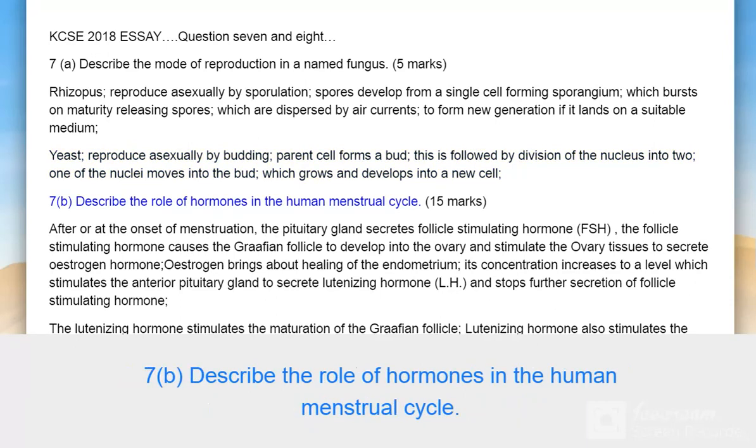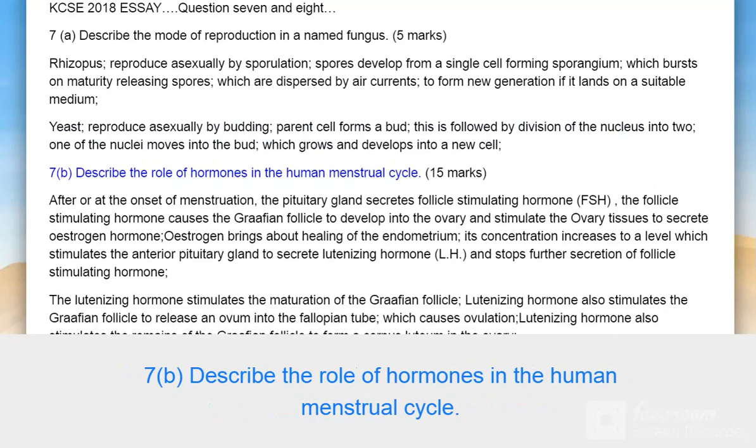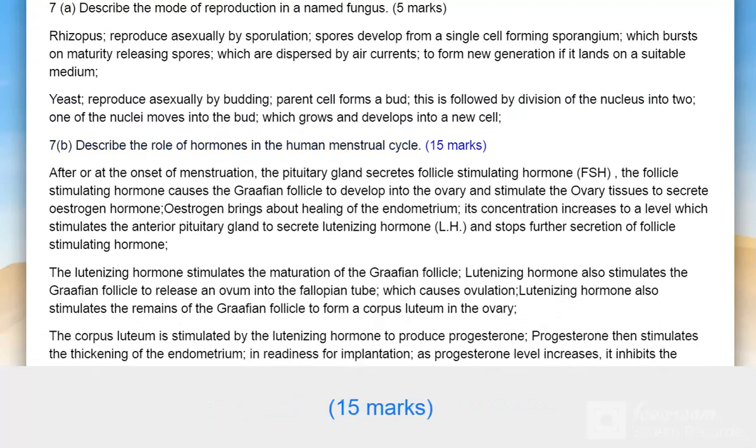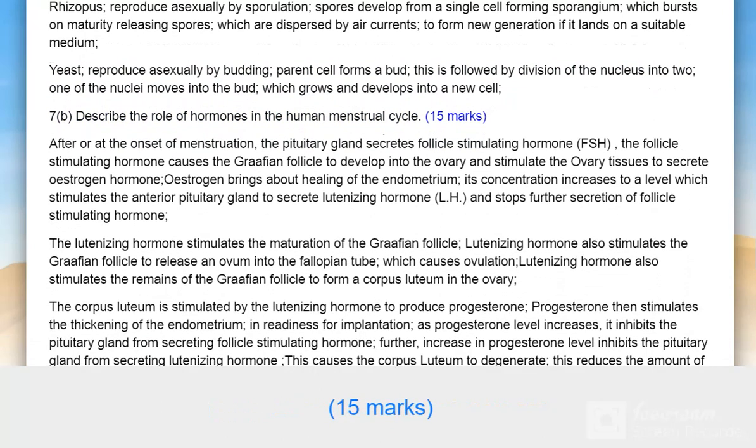Question 7B: Describe the role of hormones in the human menstrual cycle. 15 marks.